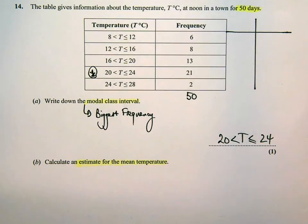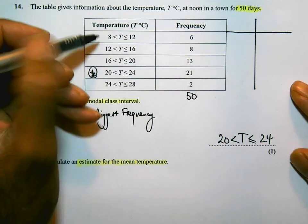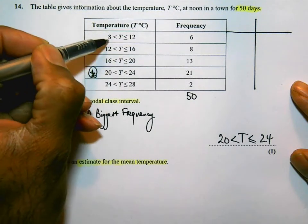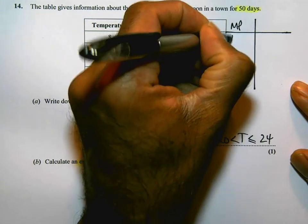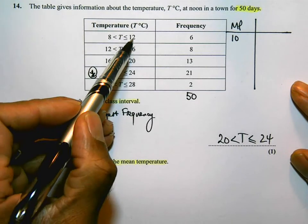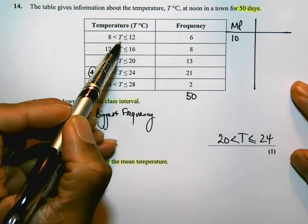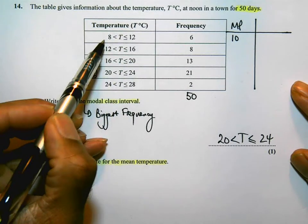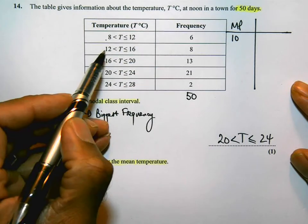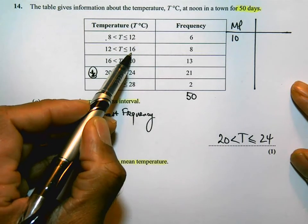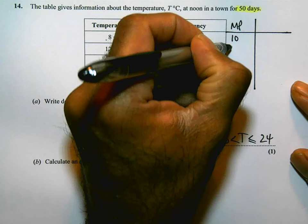So, I need to find the midpoints of each of the groups and times them by the frequency. Let's do the midpoint first. The halfway point between 8 and 12 is going to be 10. If you didn't know, you could add both numbers and then divide by 2. 8 plus 12 is 20. 20 divided by 2 is 10. 12 plus 16 is 28. 28 divided by 2 is 14.